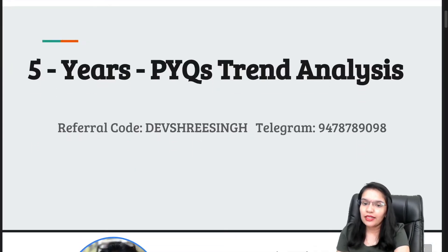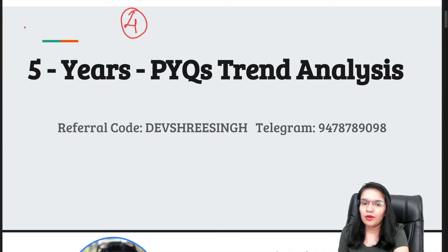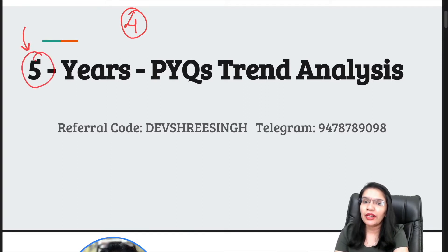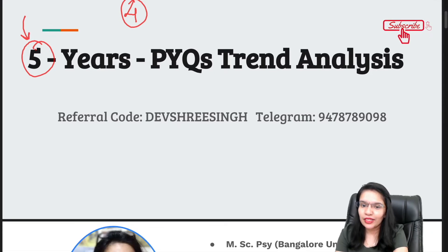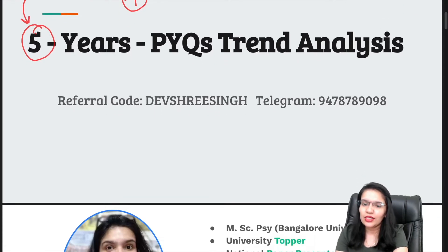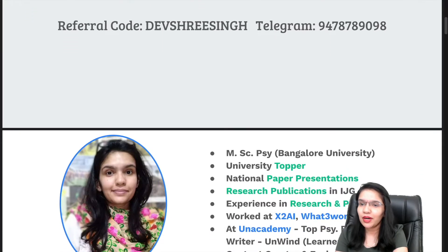In the last year, I showed you 4 years of trend analysis. This year, I am giving you 5 years of trend analysis. From that, you will get a good idea to decode the psychology pattern of UPSC, and you can build a good speed and strategy to score maximum marks in psychology.